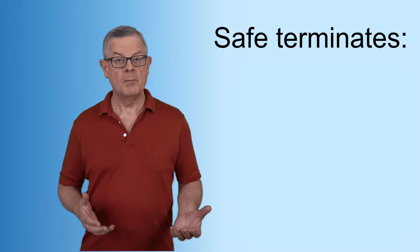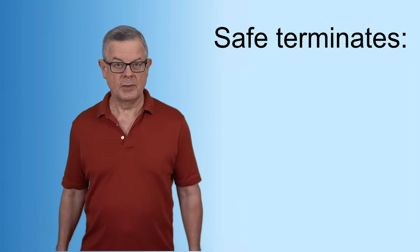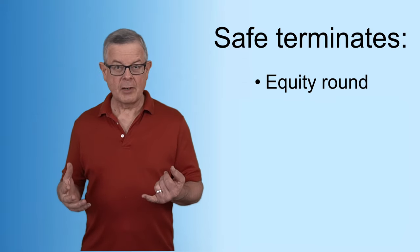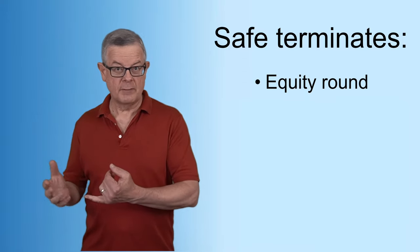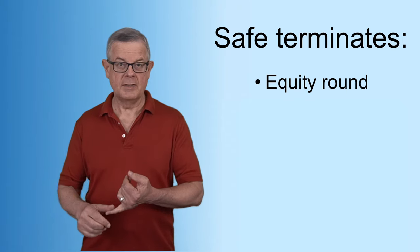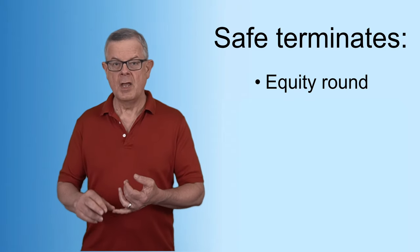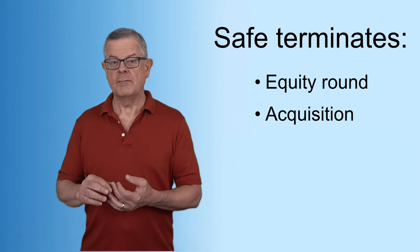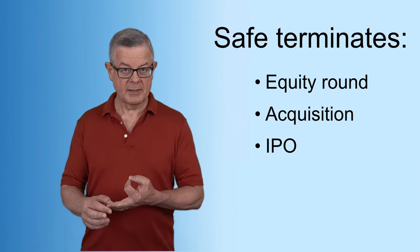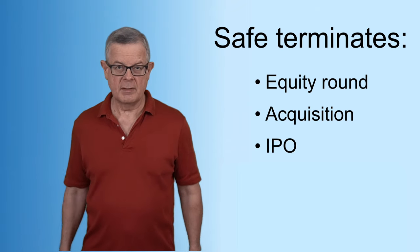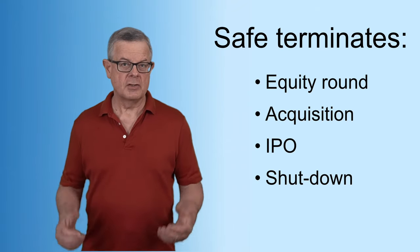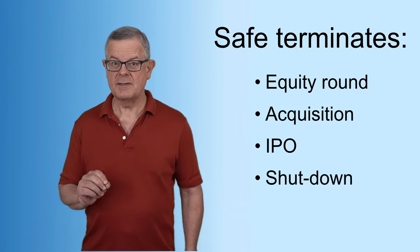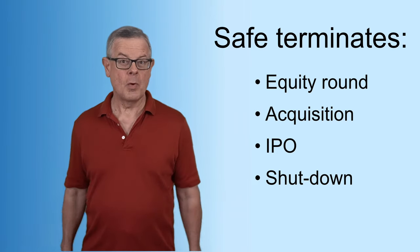A SAFE has no maturity date, unlike a convertible note. So how long does it last? A SAFE will terminate if an equity investment occurs that causes the SAFE to convert into equity — then the SAFE itself goes away. Or if there's an acquisition, the SAFE will terminate. If there's an initial public offering, that terminates it. And if the company goes out of business and shuts down, that terminates the SAFE. But if none of those four events happens, a SAFE theoretically can go on forever.